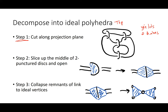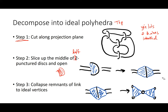The next step is to take these sliced twice-punctured discs and slice them up the middle like pita bread — slice up through the middle of the disc, then open it out and flatten it onto the plane. Finally, we're looking at the complement of the link, so we collapse the remnants of the link strands to ideal vertices — vertices that don't belong. This piece of pita bread becomes a bow tie.